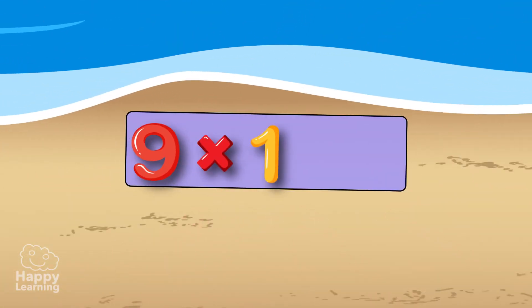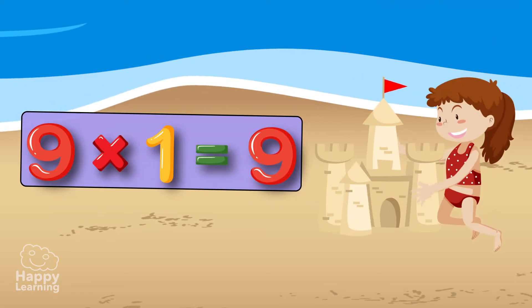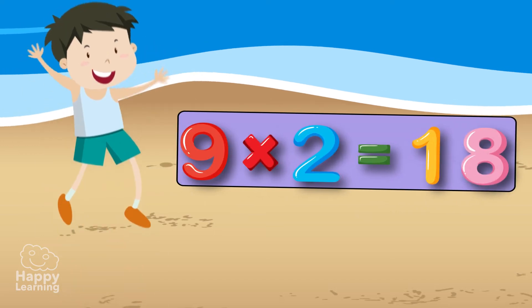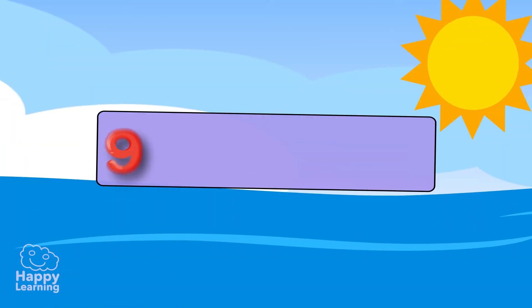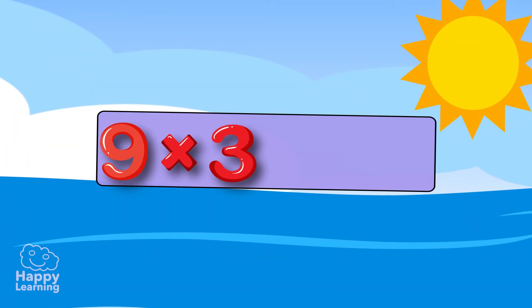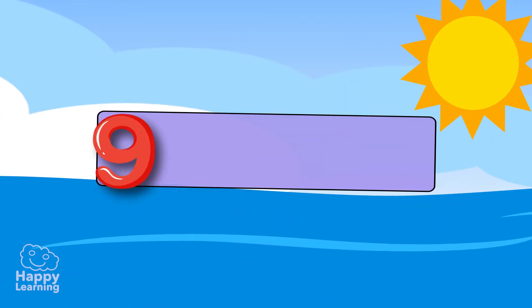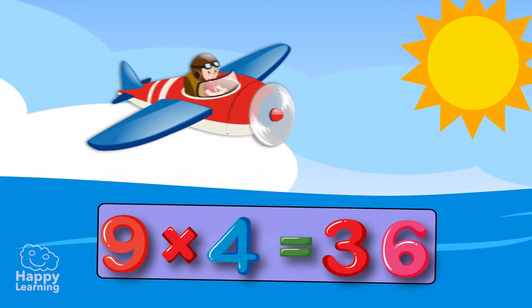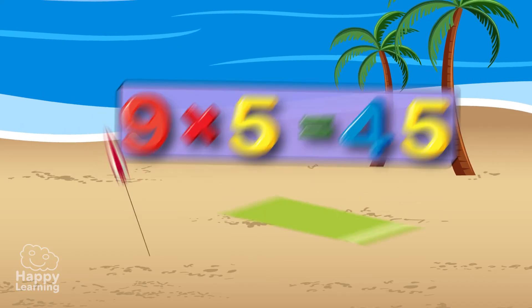Nine times one: nine. Nine times two: eighteen. Nine times three: twenty-seven. Nine times four: thirty-six. Nine times five: forty-five.